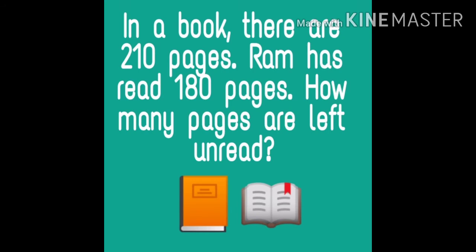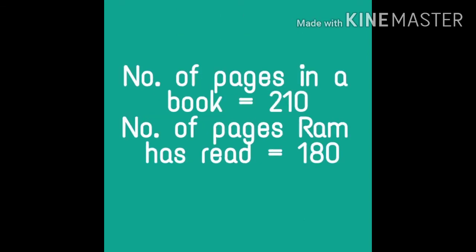Let's start. First problem: in a book there are 210 pages. Ram has read 180 pages. How many pages are left unread? You know the total number of pages in the book and how many pages Ram has read — now you have to find the number of pages left unread. The first statement will be: number of pages in a book is equal to 210. Second statement: number of pages Ram has read is equal to 180.